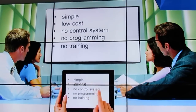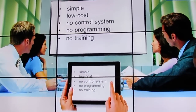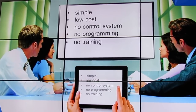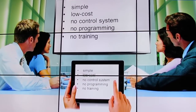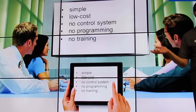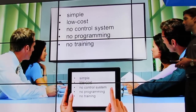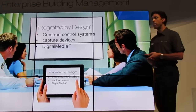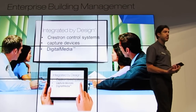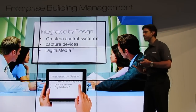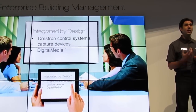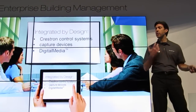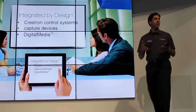It's very simple — I've already shown you how you connect and how you use it. It is very low cost; you can do a room for an MSRP of $1,600, so you really can afford to put this in every room. There's no programming, no extra hardware, no control system, no dongle, no hardware at all. It is integrated by design — it can operate as a standalone system, but the real power comes when you connect it to a Crestron control system and it becomes part of a larger enterprise management system. It also integrates with capture devices and Crestron digital media, so in addition to presenting, you can distribute and capture and store the content.